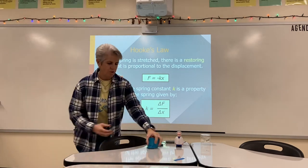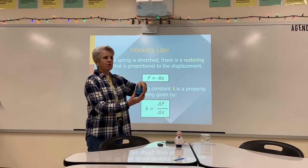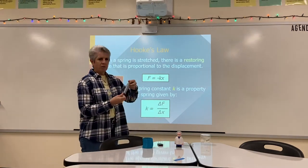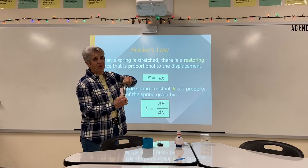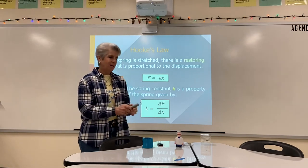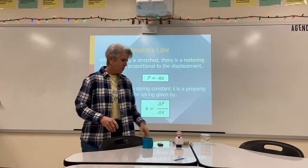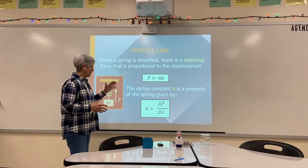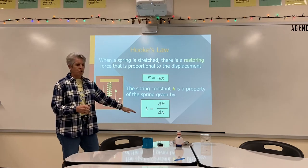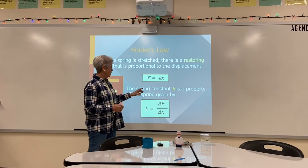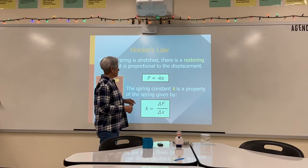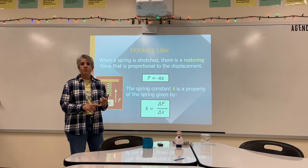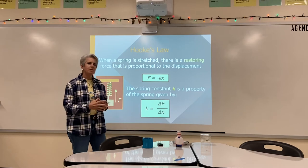The spring constant K is a property of every different spring. If you wanted to stretch the slinky, it doesn't take very much force — it would have a very small K. But if I tried to stretch this trampoline spring, it takes a lot of force and doesn't stretch very far, so it would have a very high K value. K tells us about the stiffness of that particular spring. K is defined as change in force over change in stretch, with units of Newtons per meter. K is a property of the spring — what materials it's made of, how tightly wound it is, the physical properties of that spring.